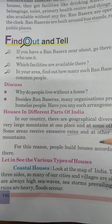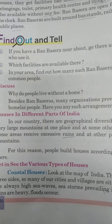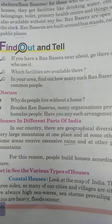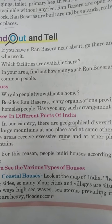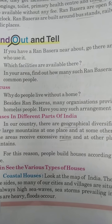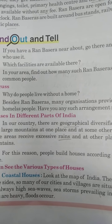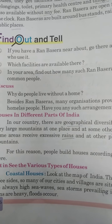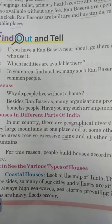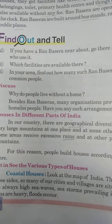Our next topic is houses in different parts of India, or we can say houses in various regions of India. India is a country having geographical diversity. There are huge mountains at some places and large open ground at other places. Some areas receive heavy rainfall while some places have a desert. So there are different types of houses in different regions according to the weather condition.